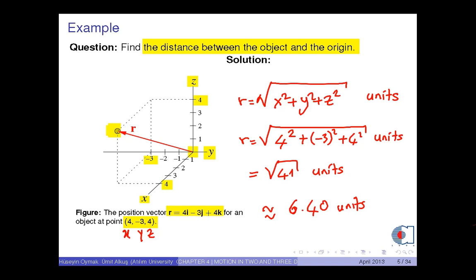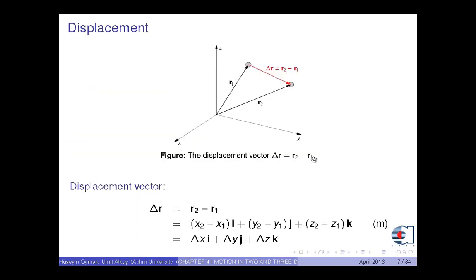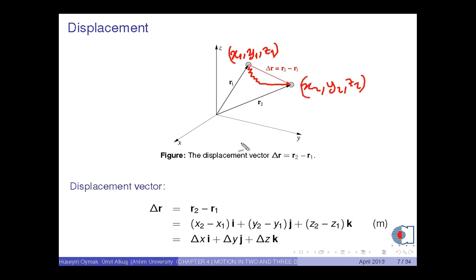Okay, let's discuss the displacement vector. Consider an object initially at point x1, y1, z1. Suppose that it moves from this point to another point x2, y2, z2 at a later time. If we denote the position vector of the first point by vector r1 and the second by vector r2, then the displacement vector, denoted by delta r, is found by the subtraction: delta r equals vector r2 minus vector r1.